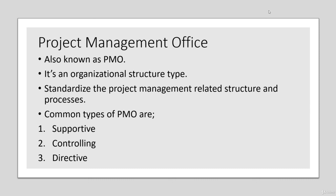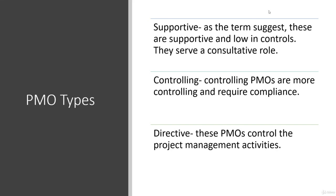The project management office is a key organizational structure type. Project management professionals work under PMOs — this is very common across industries. PMOs were created to provide a standard structure and procedures for project management purposes. There are three types of PMOs: supportive, controlling, and directive. Supportive PMOs are low in control and serve a consultative role. Controlling PMOs require compliance. Directive PMOs directly control project management activities.